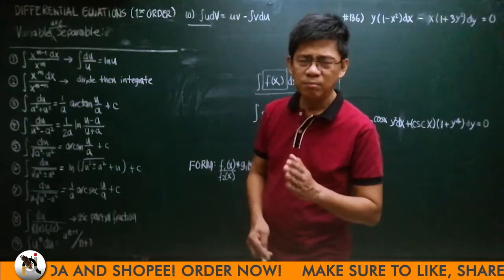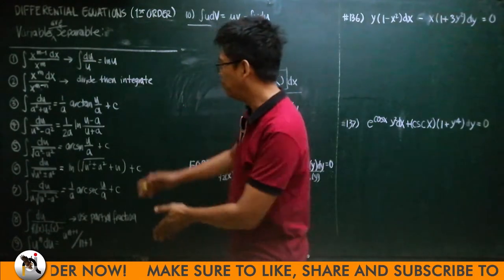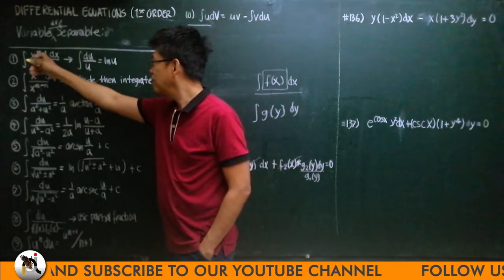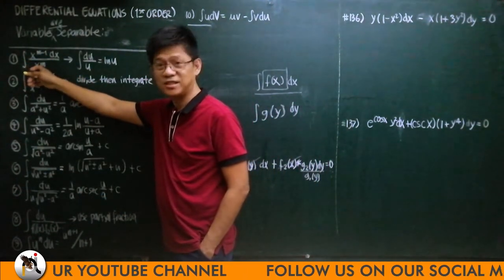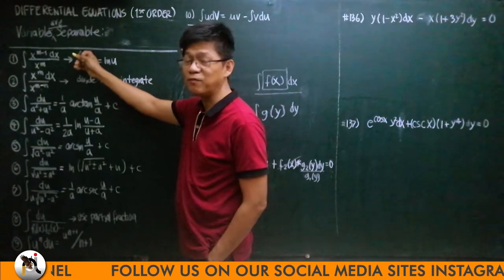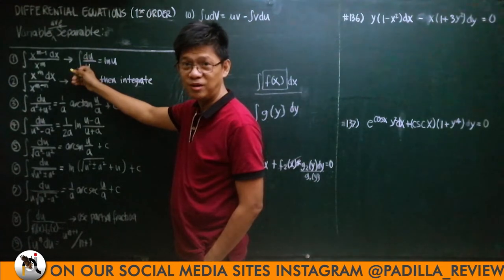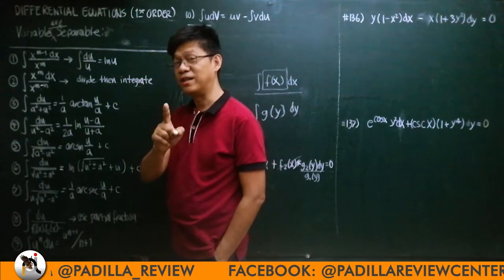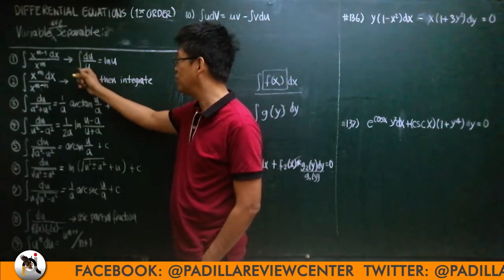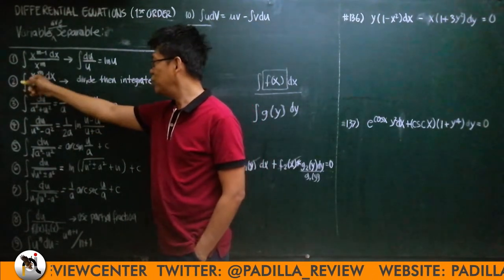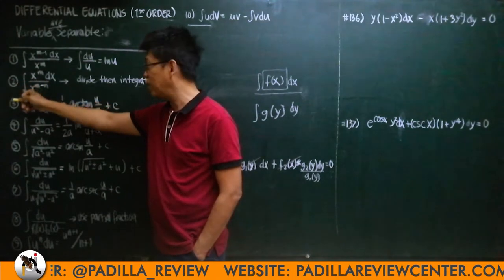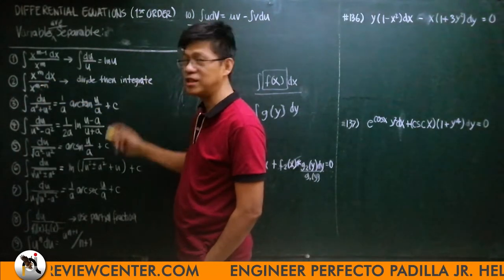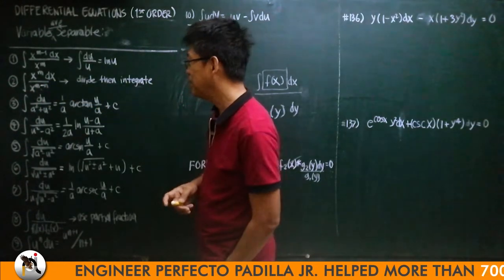Let us have an example. Before solving, keep this integration rule in mind: if the numerator is one degree lower than the denominator, it is a candidate for the integral of du/u. Remember that in differentiation the exponent is reduced by one, so that is why the integral of du/u is ln(u). If the numerator is higher or equal in degree to the denominator, divide first, then integrate using the power formula.